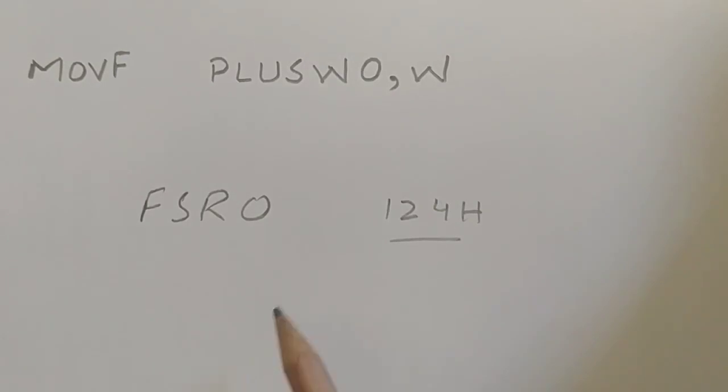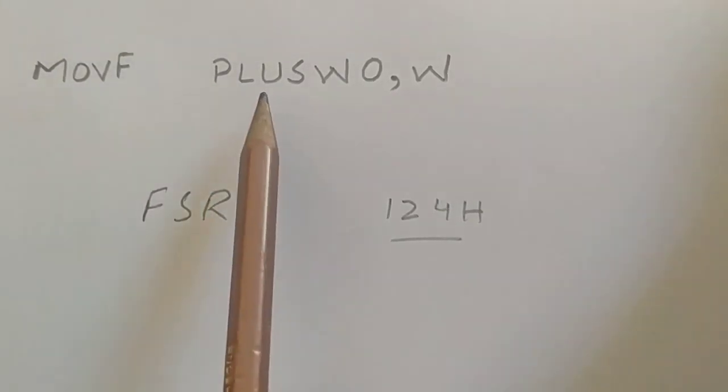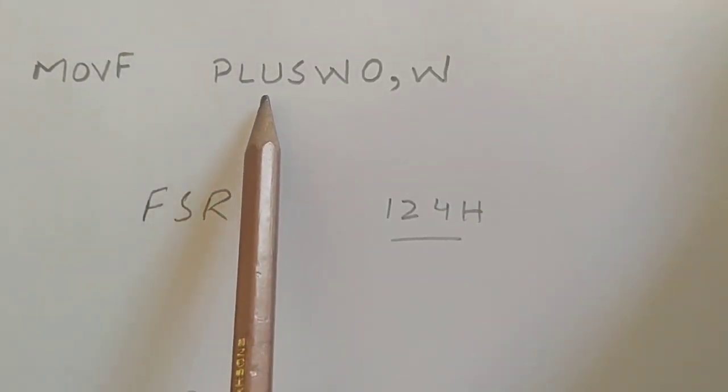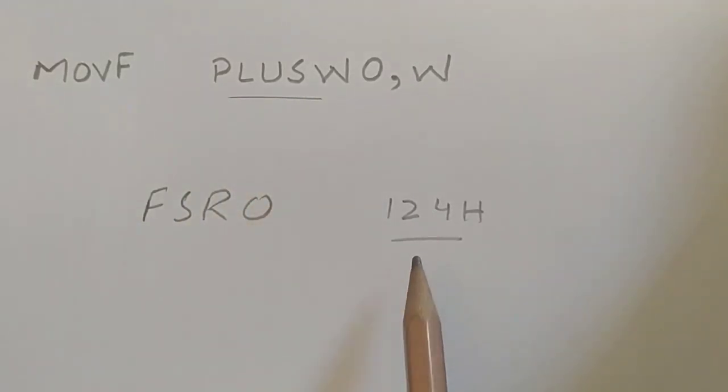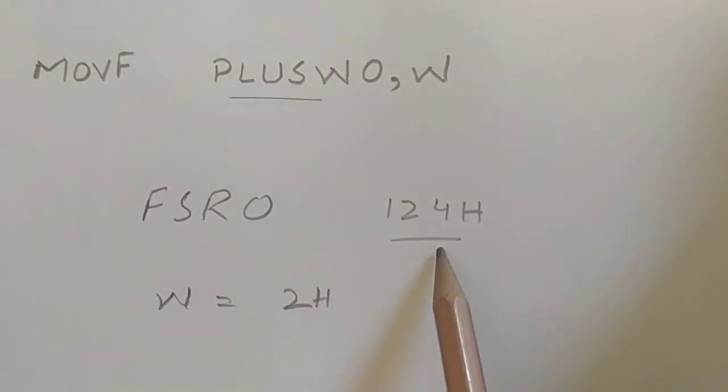This instruction will add the value of working register to this address. For example, if we are having working register containing value of 2 hex, it will add this 2 hex with 124 hex.